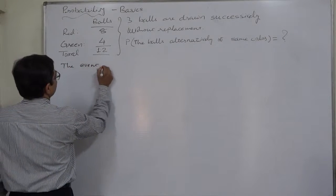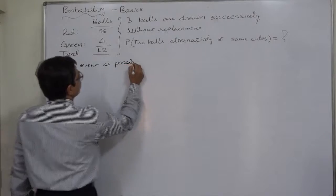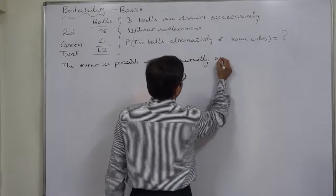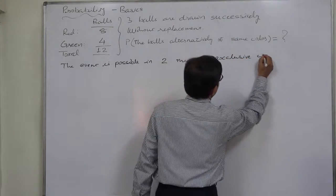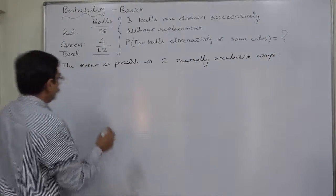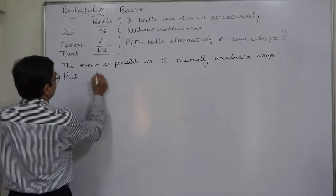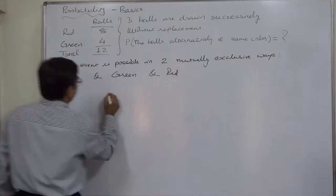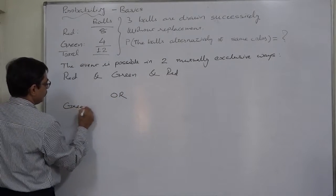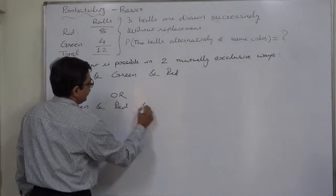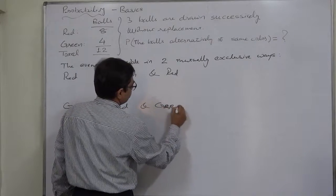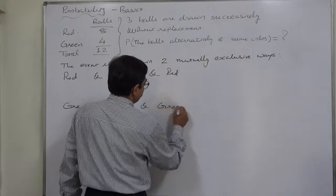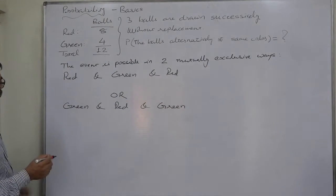So the event is possible in two mutually exclusive ways: Red-Green-Red, or Green-Red-Green. These are the two mutually exclusive ways in which the event can happen.